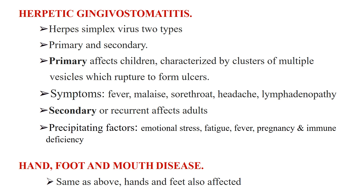The second viral infection is herpetic gingivostomatitis, also known as oral labial herpes. It is caused by herpes simplex virus and is of two types, primary and secondary. Primary infection affects children and is characterized by clusters of multiple vesicles which soon rupture to form ulcers; any part of the oral cavity may be affected. Constitutional symptoms like fever, malaise, and headache may accompany sore throat and lymphadenopathy.